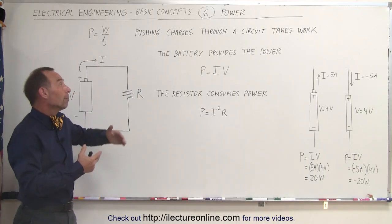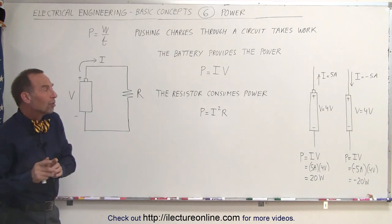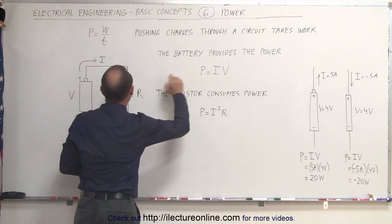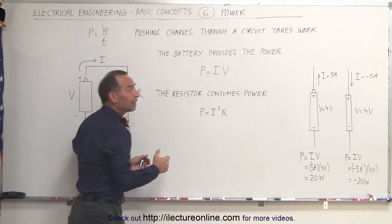The battery, or any sort of power source, will provide that power. And the equation that we use to indicate how much power the battery produces is equal to the current that the battery pushes through the circuit times the voltage that the battery has.